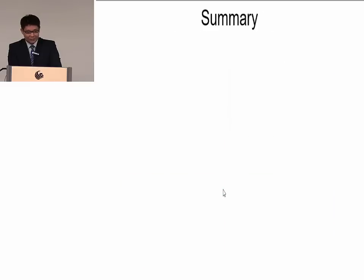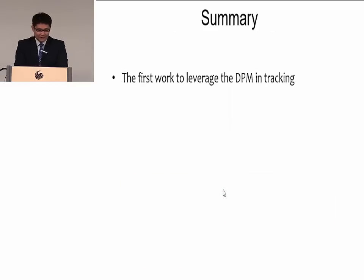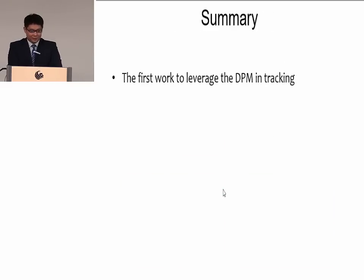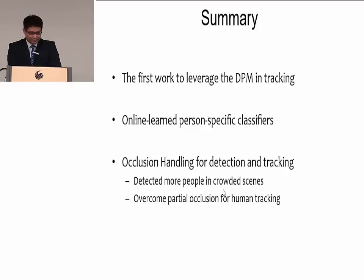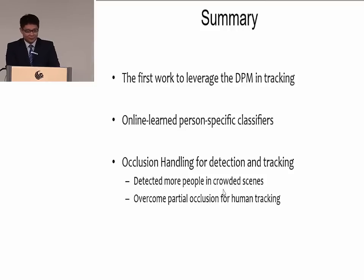To summarize this chapter: this is the first work to leverage DPM in tracking. We propose an online learned person-specific classifier for multiple person tracking, and we propose two occlusion handling methods for detection and tracking.